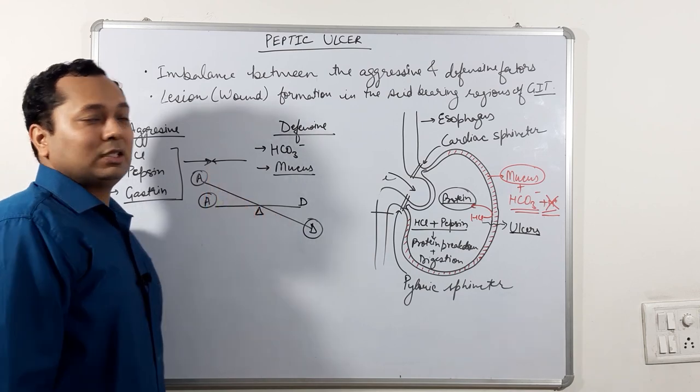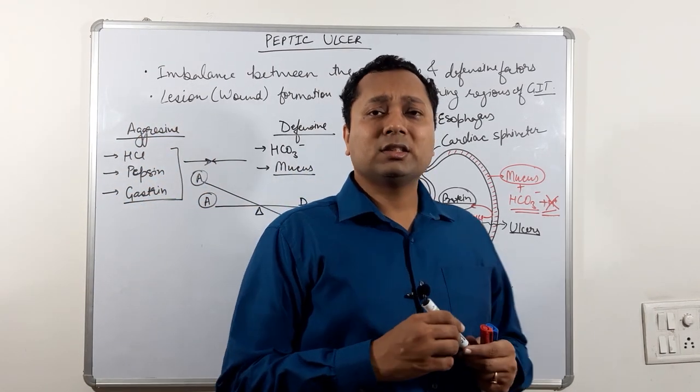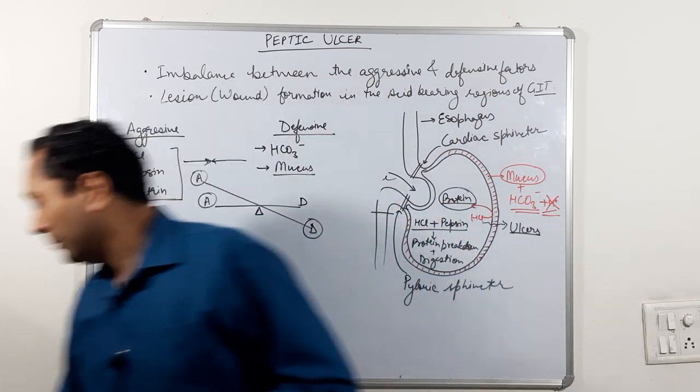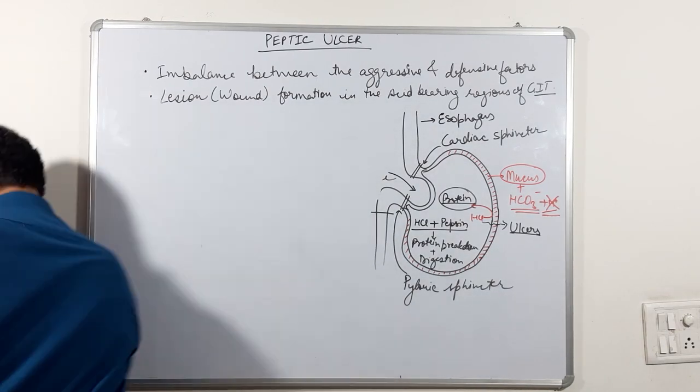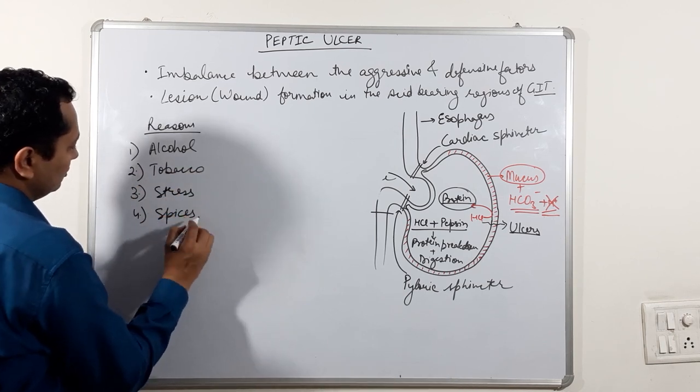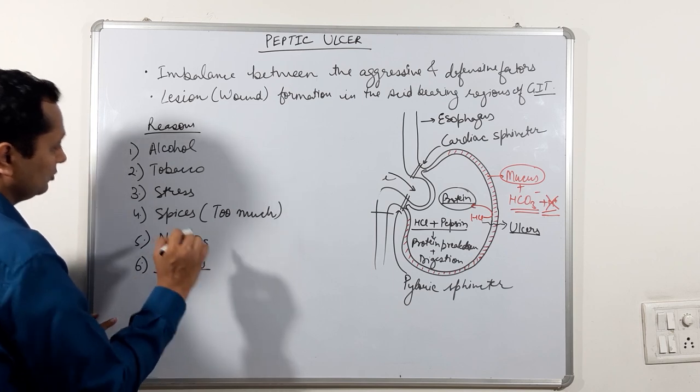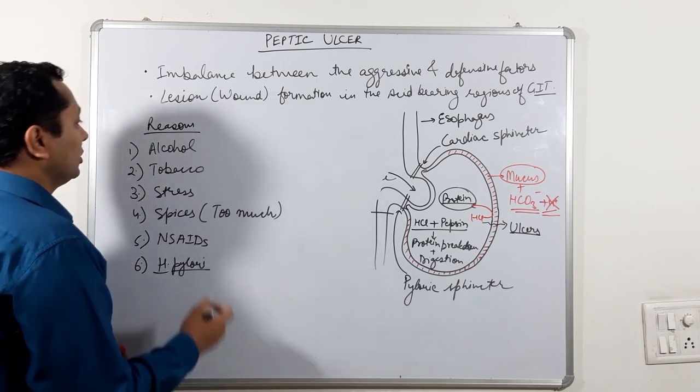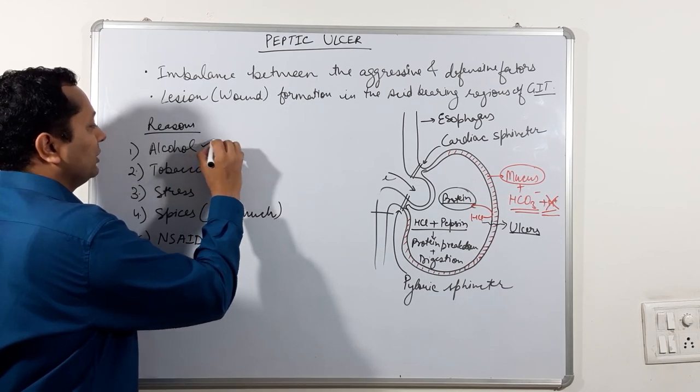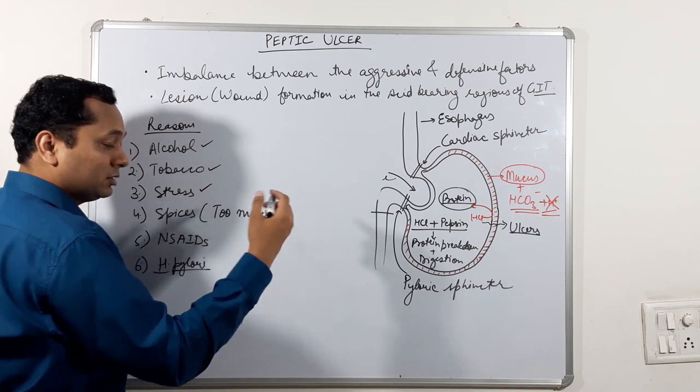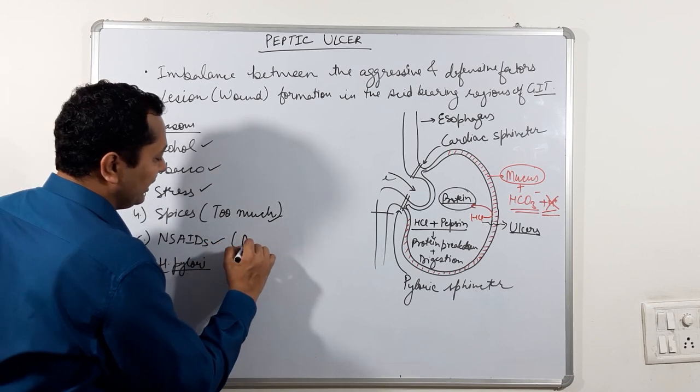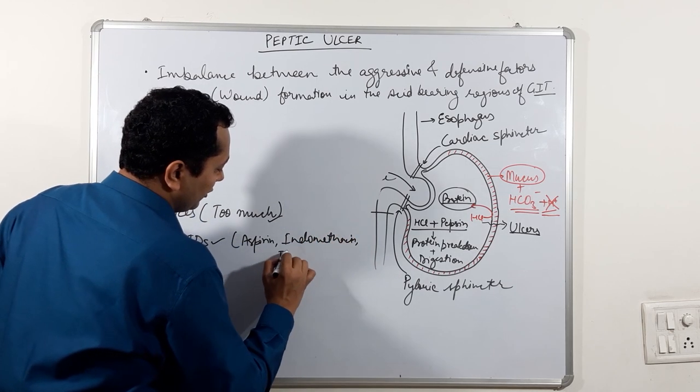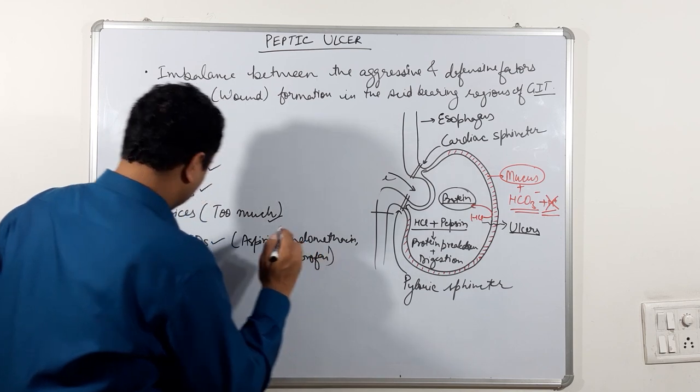What can be the reasons that can trigger development of ulcers? There can be number of reasons. The reasons that can cause ulcer development is alcohol, tobacco, stress, too much spices, NSAIDs for example aspirin, indomethacin and ibuprofen.